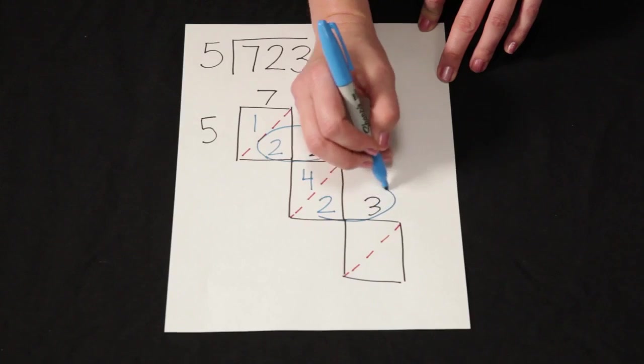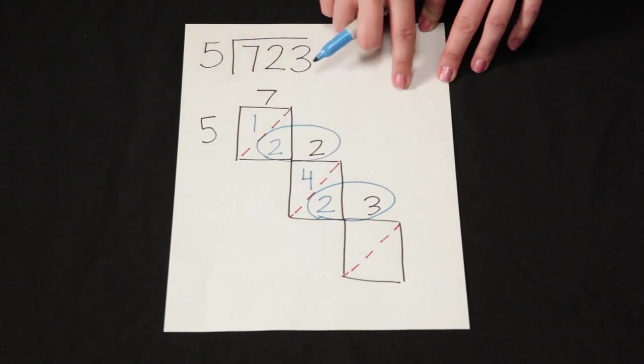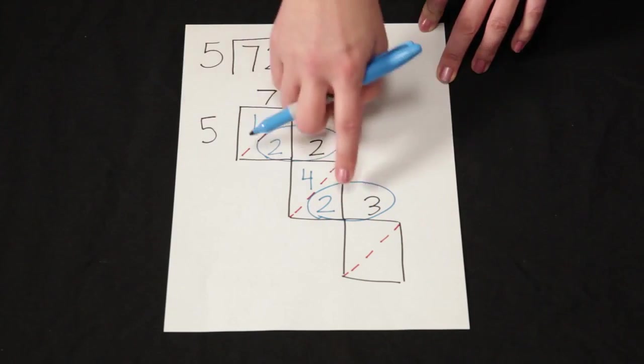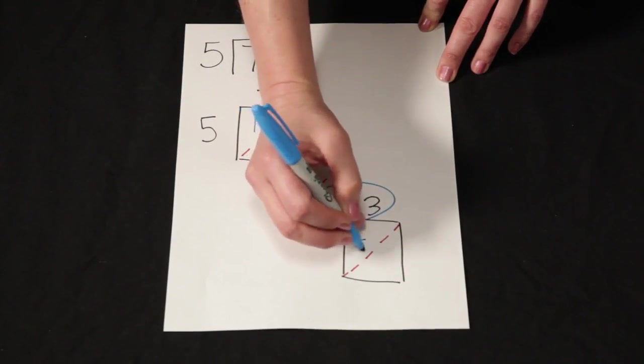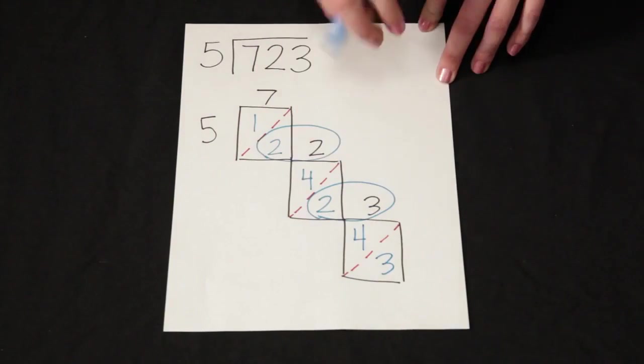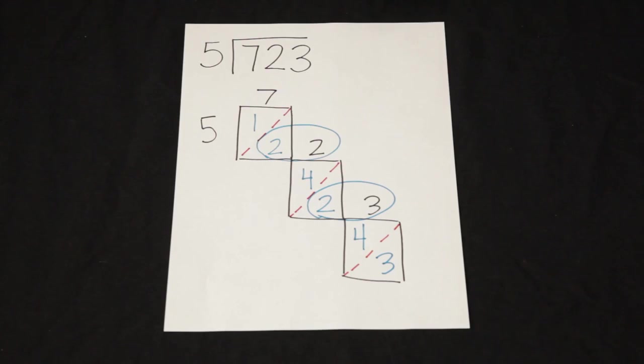Now I'll circle this set of numbers. This now represents 23. How many times does 5 go into 23? 4 times with 3 remaining or 3 left over.